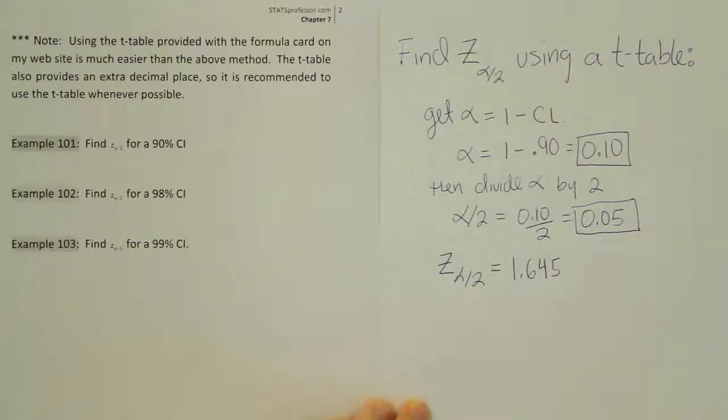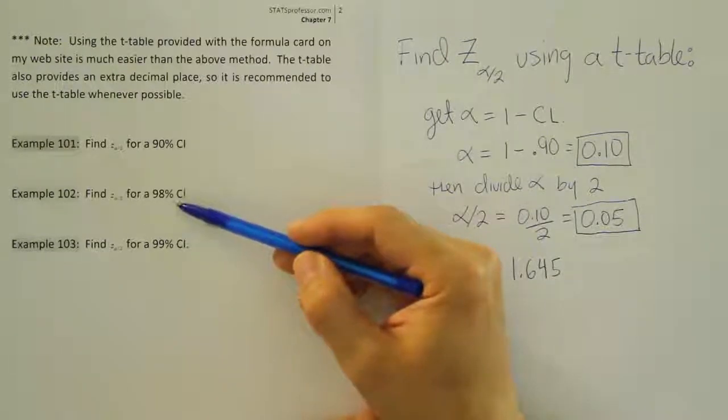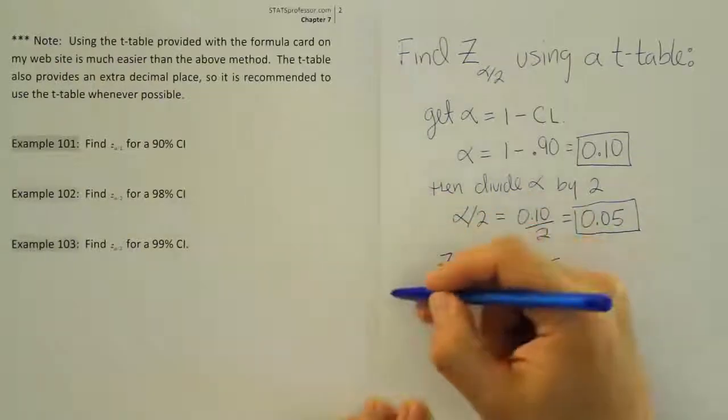To work faster, what we're going to do is we're simply going to, for these problems, identify alpha in our heads, and then we're going to chop it in half in our heads, and then we'll look that number up on our table. So let's do the next example then.